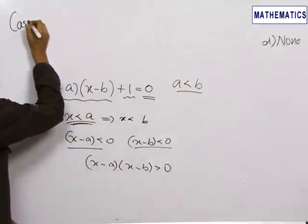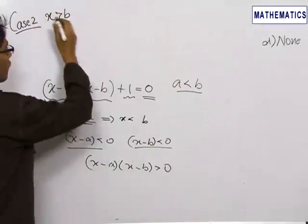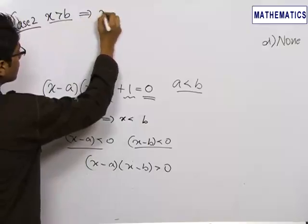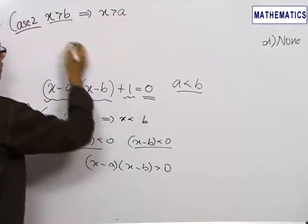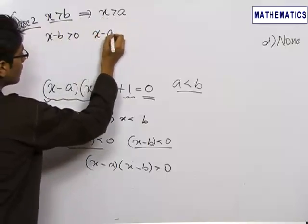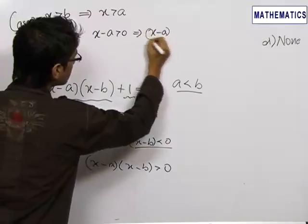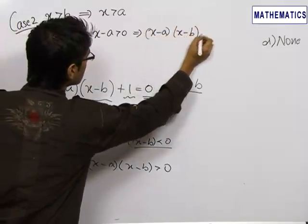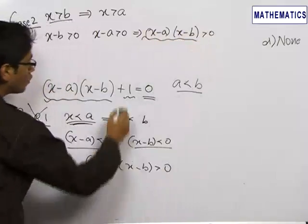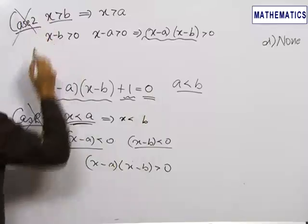Similarly, we take Case 2 as x greater than b. Now, if x is greater than b, then definitely x would be greater than a as well. So, x minus b would be greater than 0 and x minus a would be greater than 0, and hence their product x minus a into x minus b would be greater than 0. A positive thing added to 1 again cannot lead to 0.